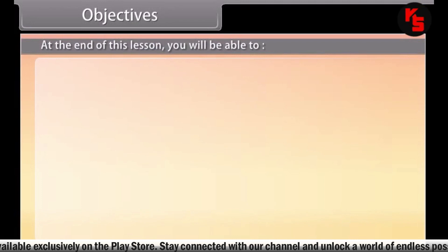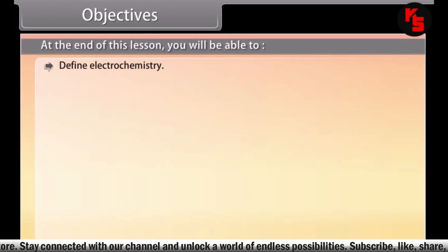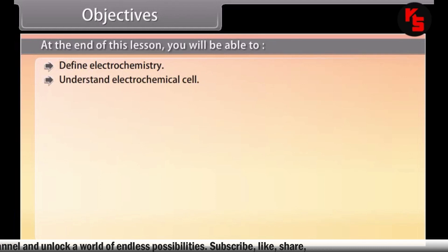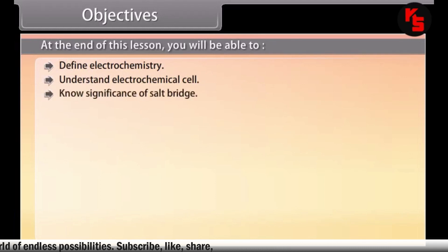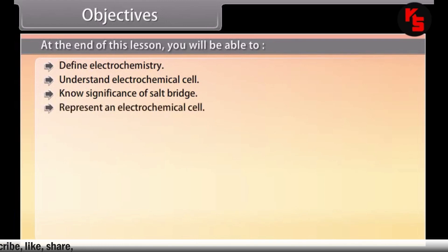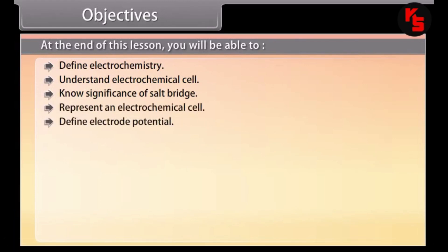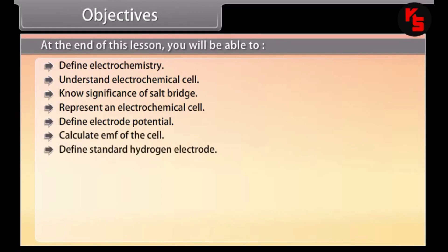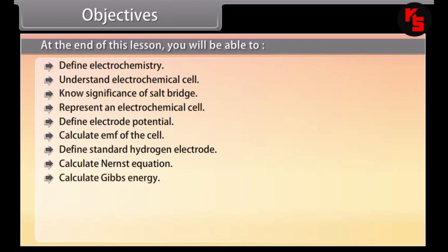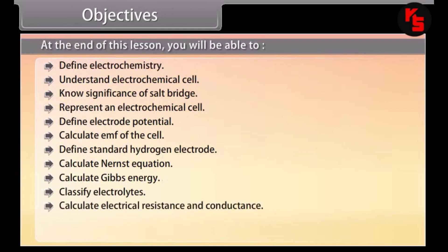Objectives. At the end of this lesson, you will be able to: define electrochemistry; understand electrochemical cell; know the significance of salt bridge; represent an electrochemical cell; define electrode potential; calculate EMF of the cell; define standard hydrogen electrode; calculate using Nernst equation; calculate Gibbs energy; classify electrolytes; calculate electrical resistance and conductance; calculate cell constant; and explain related concepts.